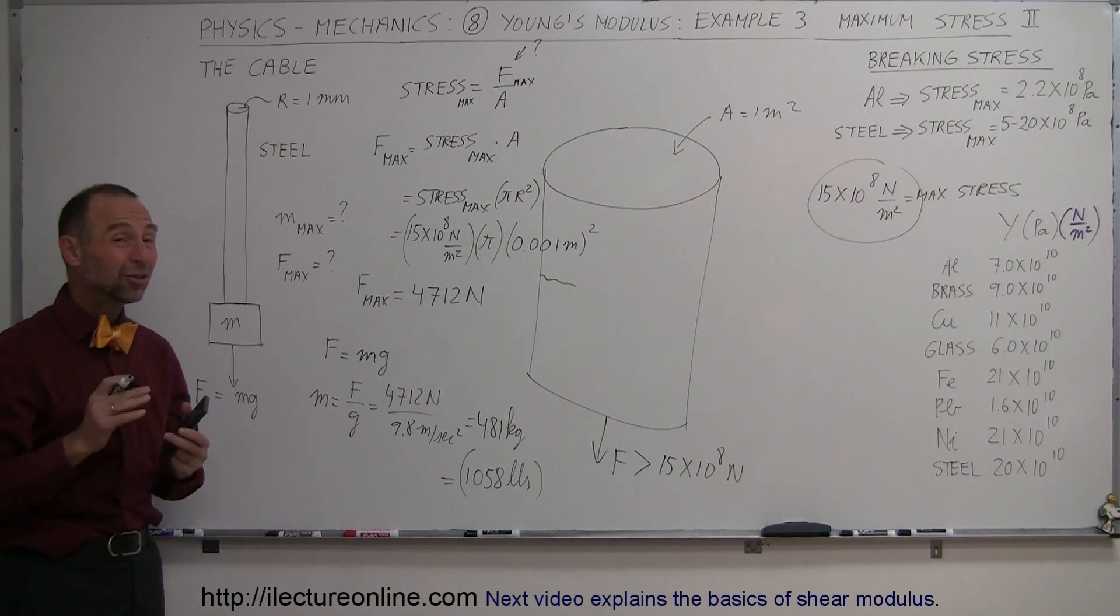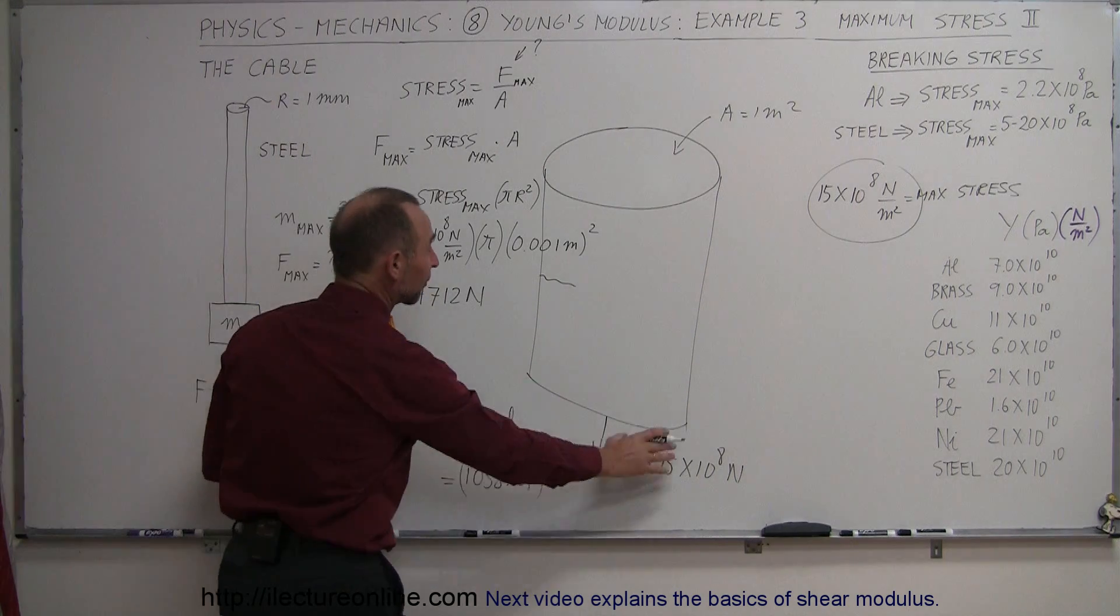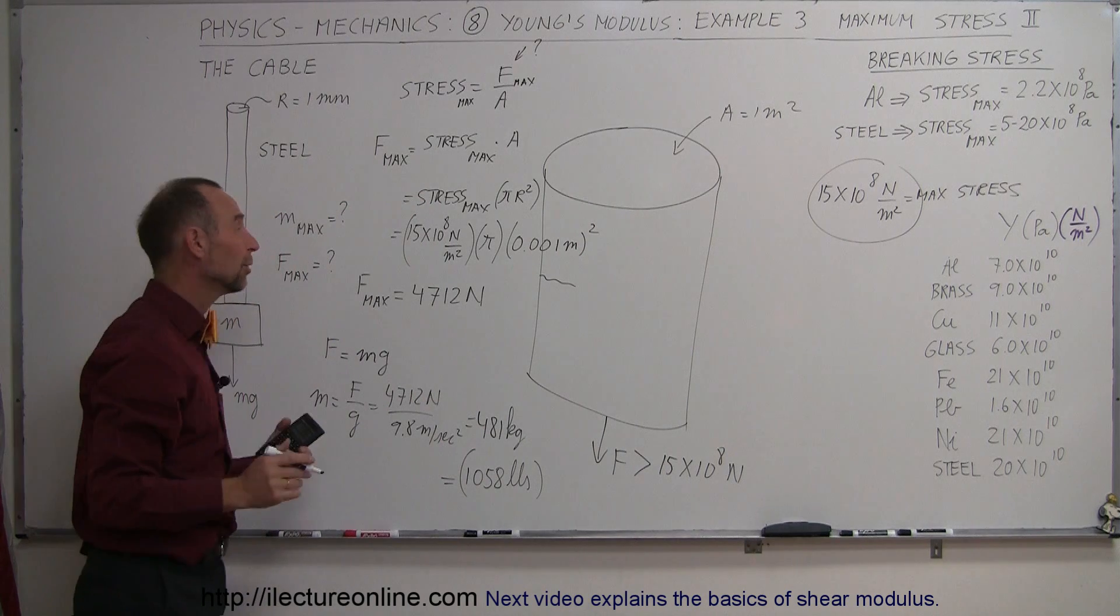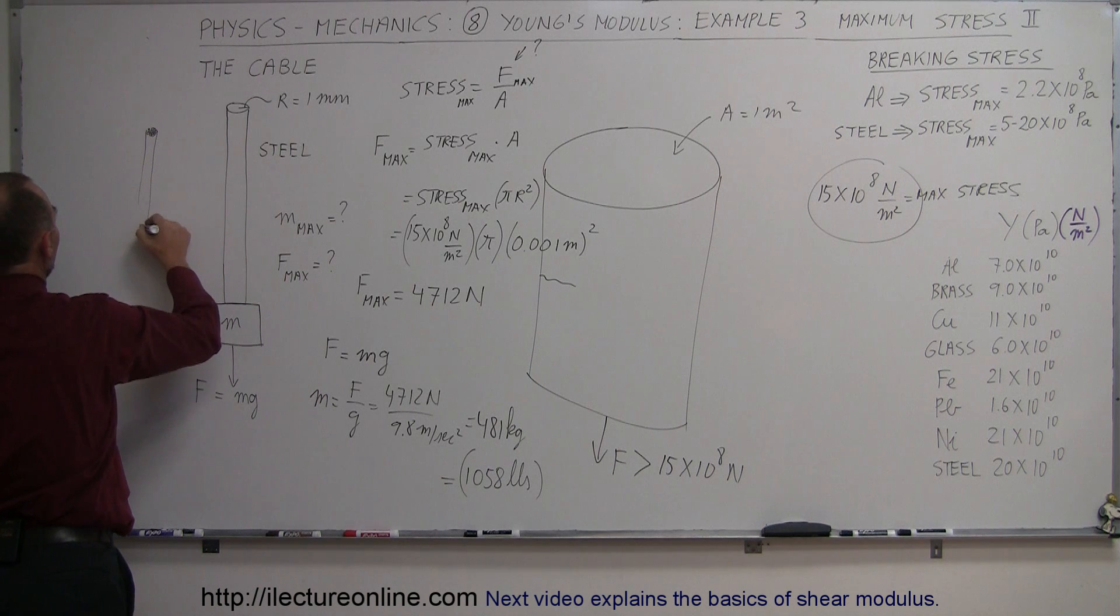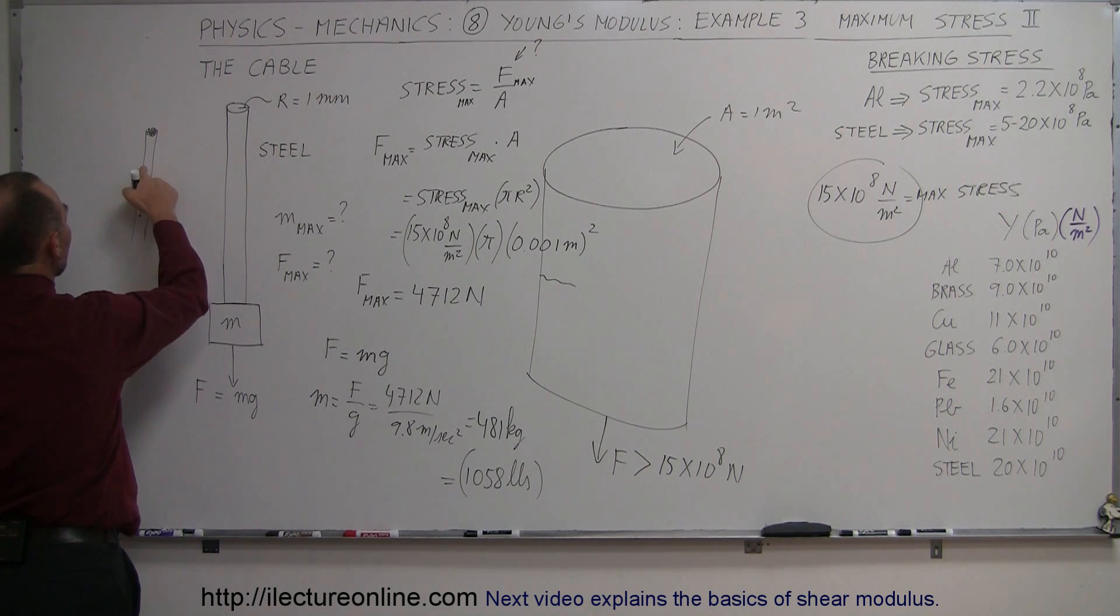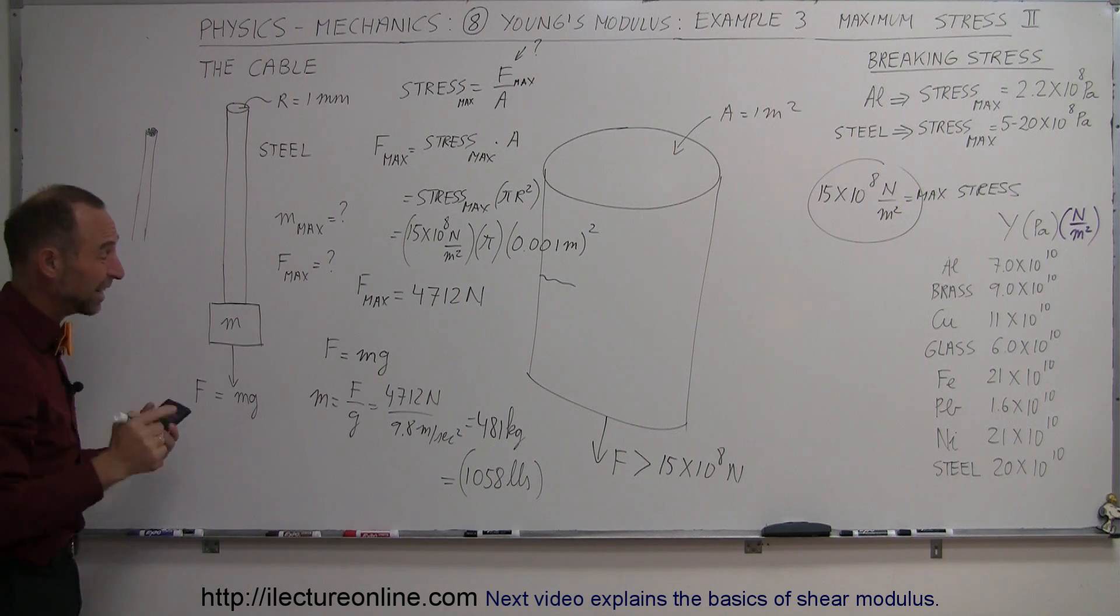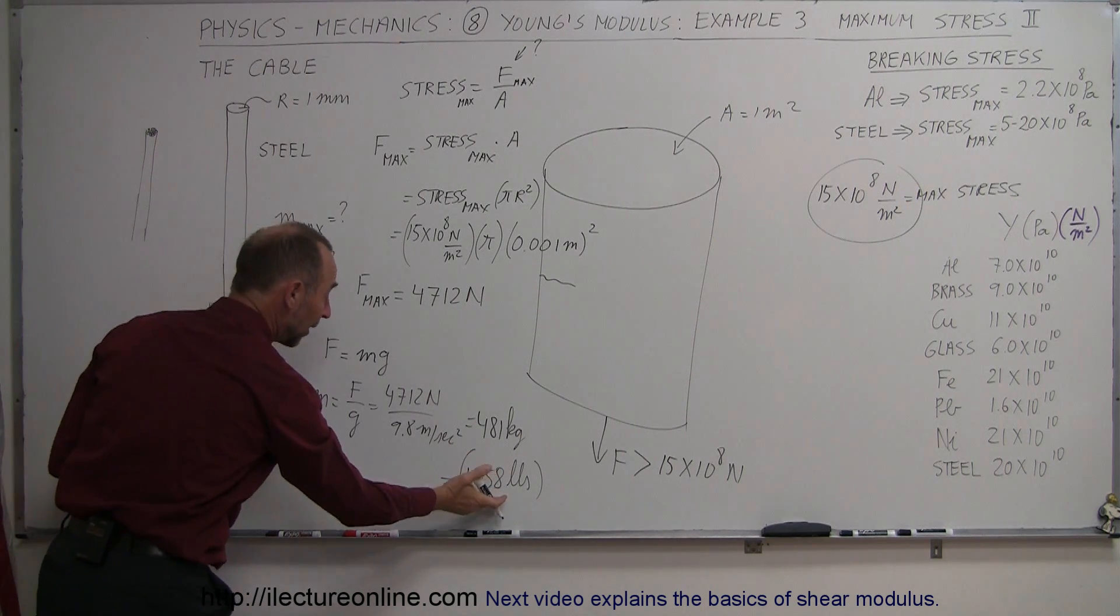So how do you make a really strong cable that has an equivalent strength of a cable like this? Well, what you would do is you take a whole bunch of these small cables, and you bundle them together. Let's say if you make a bundle of 10 of these, and you bundle them all together like that. Now you have a cable that is 10 times as strong as its individual strands of the cable.